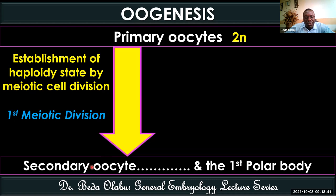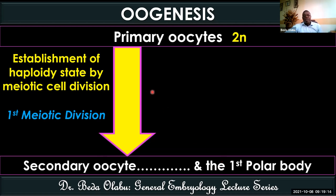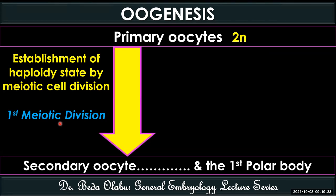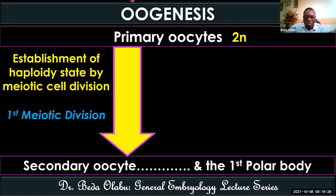Then the secondary oocyte undergoes the second meiotic division to give us the mature ovum and the second polar body. So the primary oocyte successfully completing the first meiotic division gives us a secondary oocyte and the first polar body. We borrow the same terminology from mitosis — prophase, metaphase, anaphase, telophase — and for meiosis one we say prophase one, metaphase one, anaphase one, and telophase one.